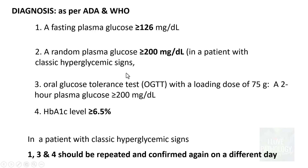In a patient with classic hyperglycemic signs, criteria 1, 3, and 4 — fasting plasma glucose, oral glucose tolerance test, and HbA1c — must be repeated and confirmed on a different day to make a diagnosis of diabetes mellitus. The random plasma glucose ≥200 mg/dL criterion alone does not require repeat confirmation.